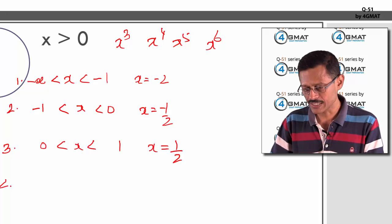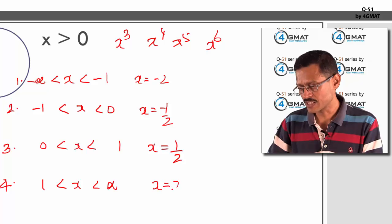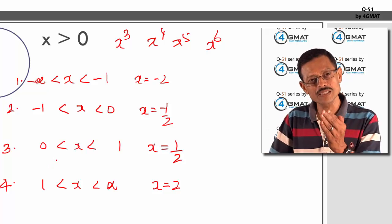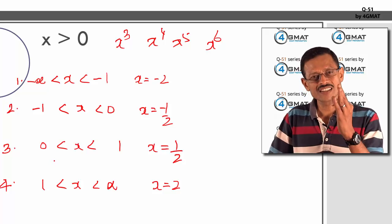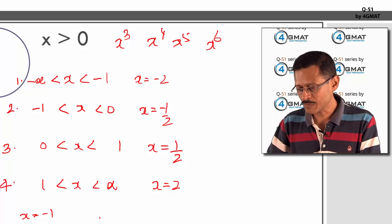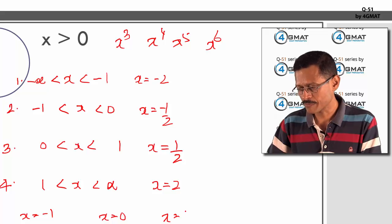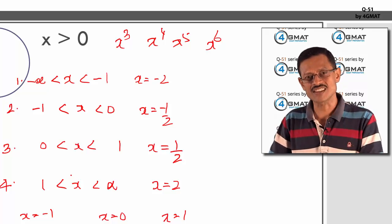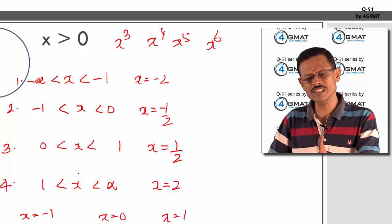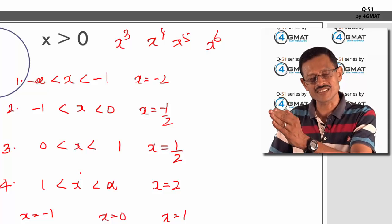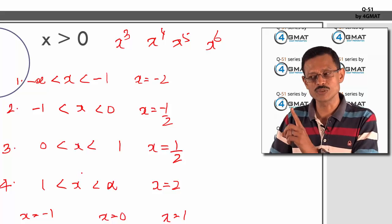Fourth interval: x > 1 — test with x = 2. So those are the four intervals. In addition, there are three border points to evaluate: x = −1, x = 0, and x = 1. Always check how expressions behave at these border points too. This is the complete framework to remember from this question.